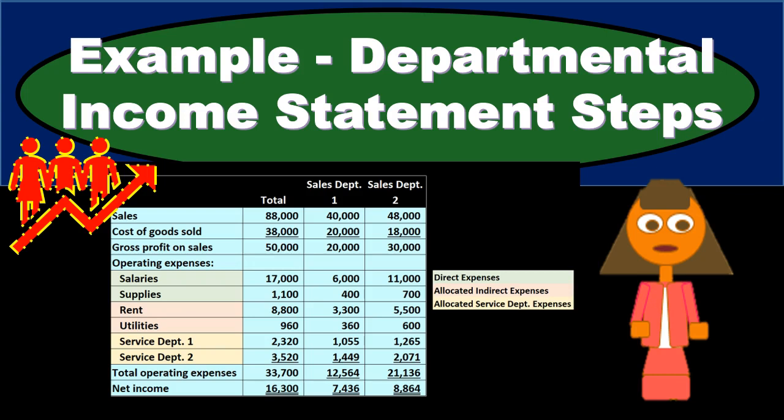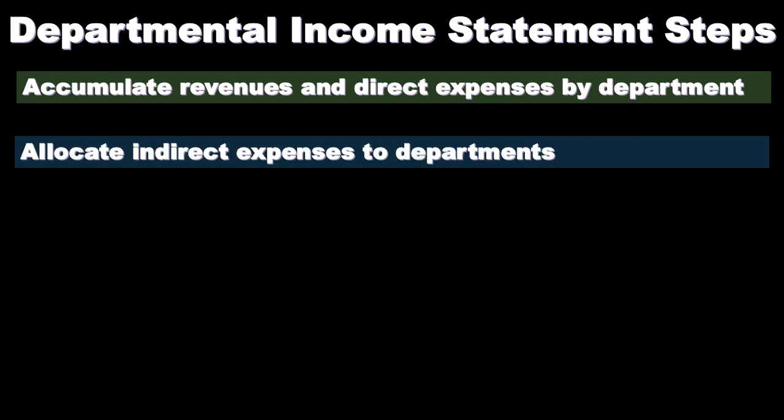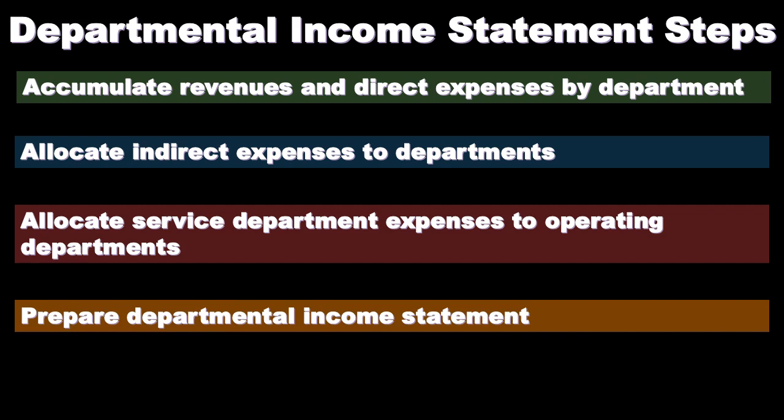In this presentation we will work an example problem related to steps to take to create the departmental income statement. Here's a review of the four steps: we will accumulate revenue and direct expenses by department, allocate indirect expenses to departments, then allocate service department expenses to operating departments, and finally prepare the departmental income statement.